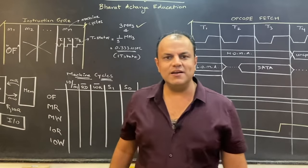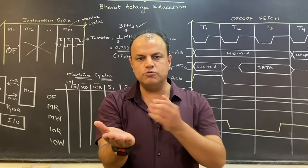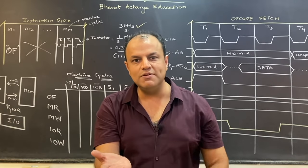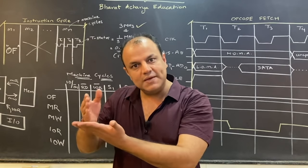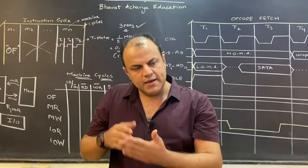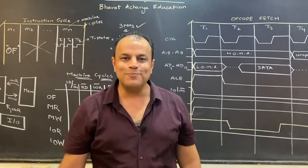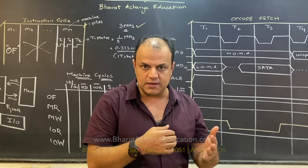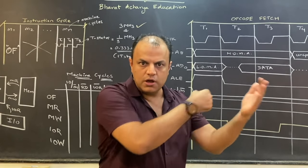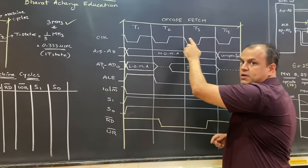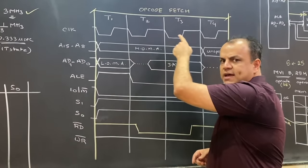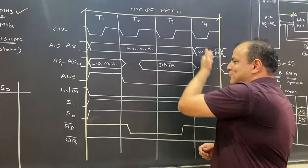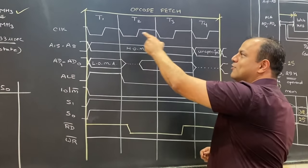क्यों ऐसा? क्योंकि processor living object नहीं है, उसको time समझ में नहीं आता। Processor को एक minute के लिए पकड़ो या एक घंटे के लिए पकड़ो — हमको समझ में आएगा कि एक minute या एक घंटा हुआ, processor को नहीं आएगा। हर clock pulse में जो timing diagram बनाते हैं वो clocks सबसे ऊपर बनाए जाते हैं — हर timing diagram में ऐसे ही दिखते हैं।